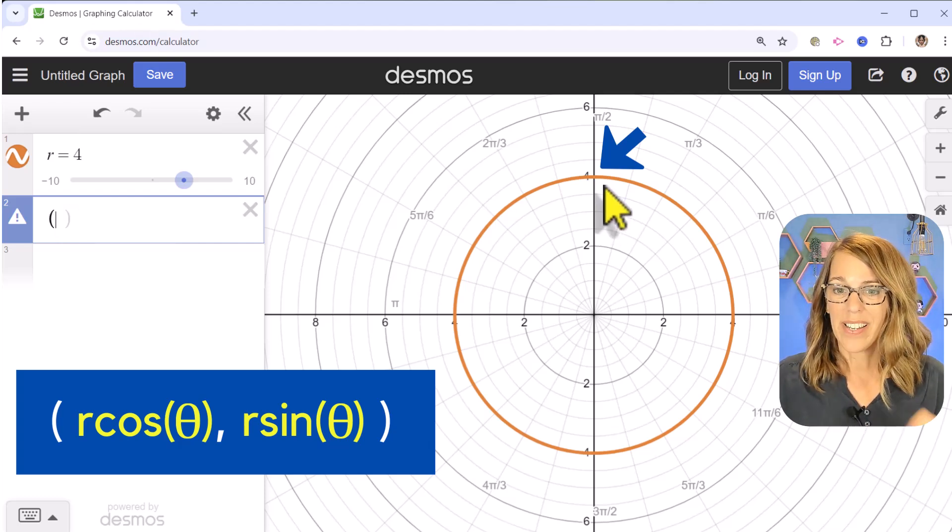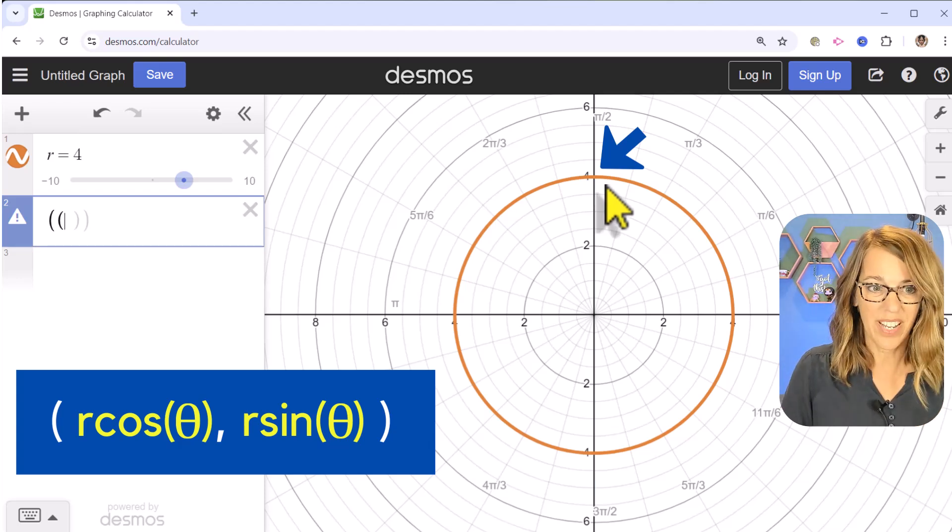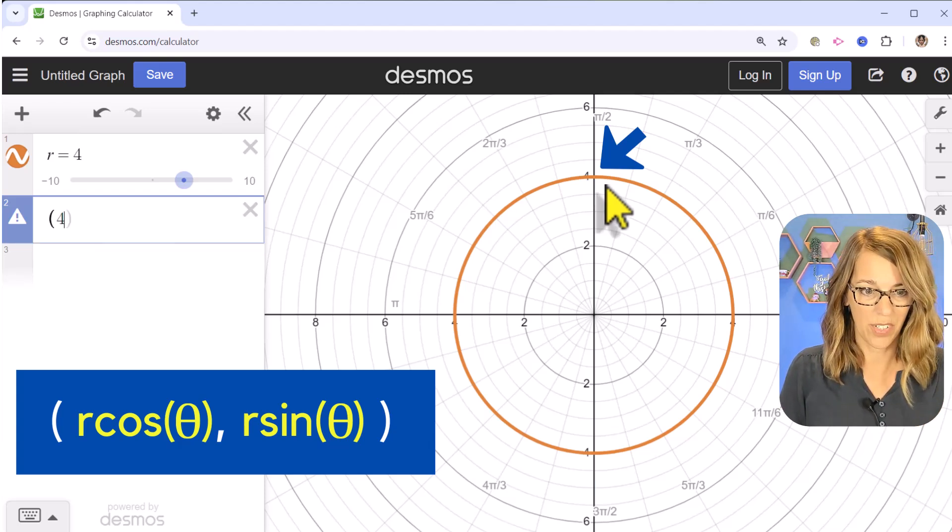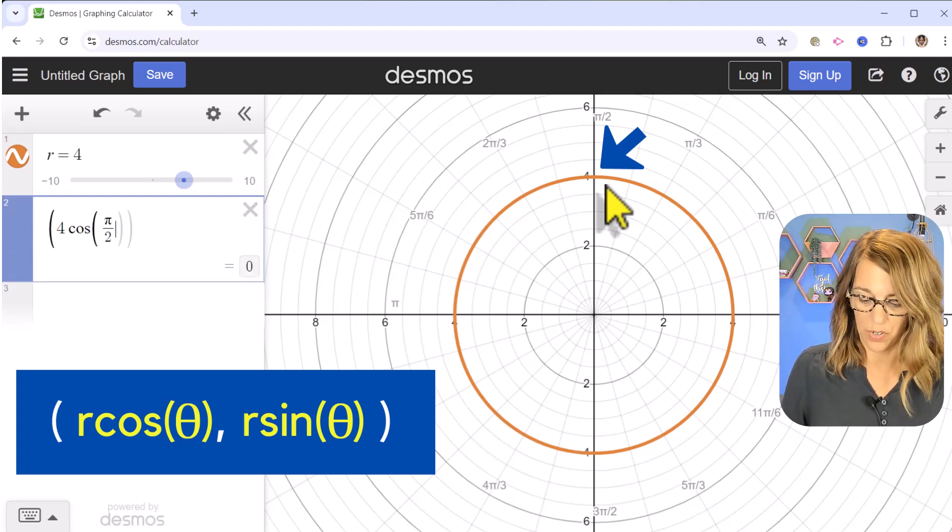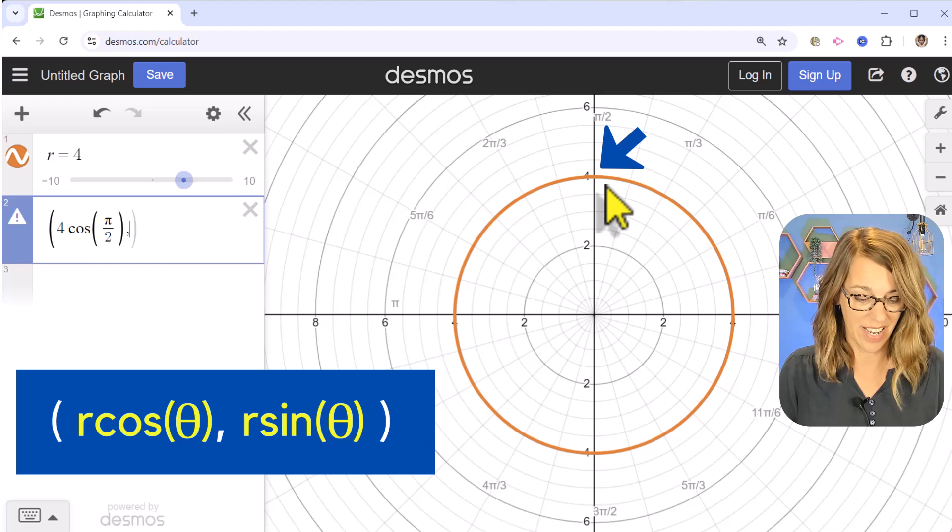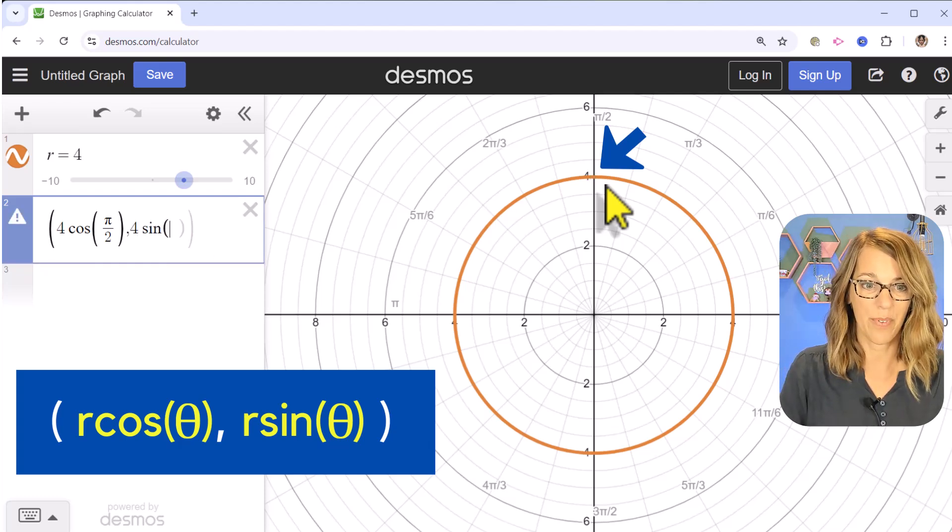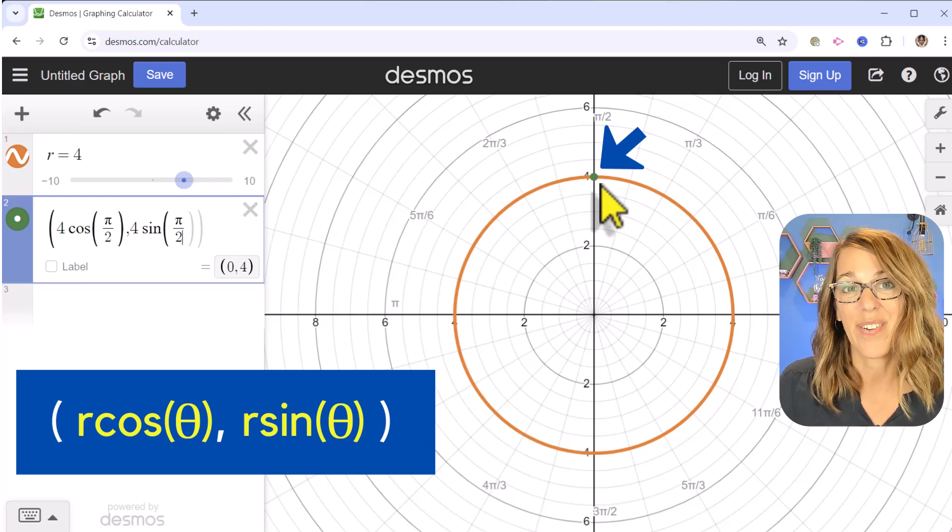So for this point, r is equal to 4 and θ is equal to π/2. So putting it into that form, I want r, which is 4*cos(θ), which is π/2. Let's put a parenthesis around that, comma, and then I want r*sin(θ), so 4*sin(π/2), and it gives me the correct point.